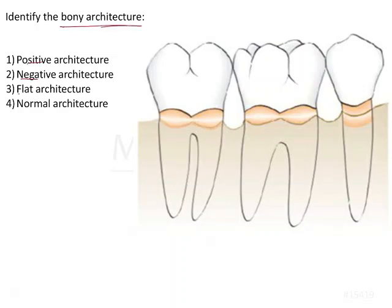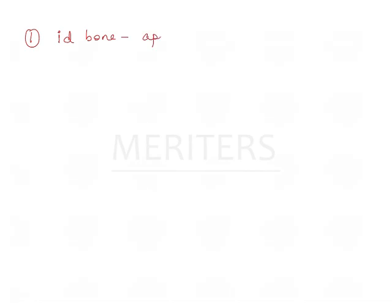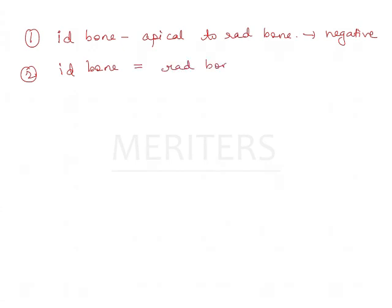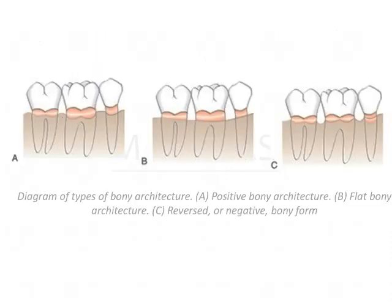We identify bony architecture as positive, negative, flat, or normal. Bony architecture refers to the position of the interdental bone with respect to the radicular bone. If the interdental bone is more apical to the radicular bone, it has negative architecture. If they are at the same level, it is flat architecture. If the interdental bone is more coronal to the radicular bone, it is positive architecture.